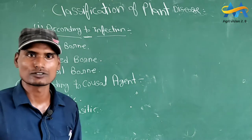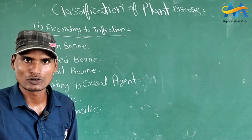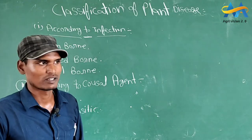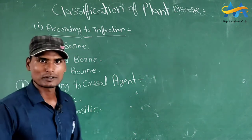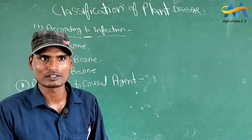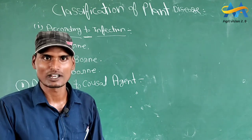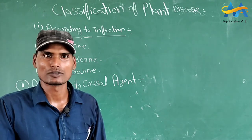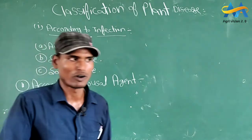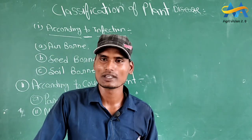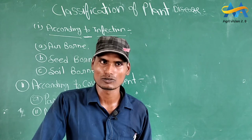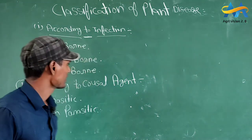Next are soil-borne diseases. जब रोगजनक भूमि के अंदर यानि pathogen जब भूमि के अंदर ही पाई जाए और एक favourable condition उसे उपलब्ध हो, तो वो पौधों में disease development करता है।